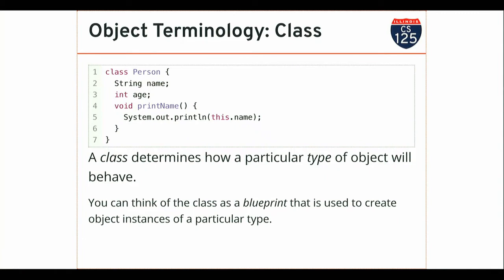To work with people in this particular application I need to know two things: their age, stored as an integer, and their name, stored as a string. Obviously you could store age as a double — people's age is not really an integer, it's a very precise floating point number that's always increasing. But for my program, I've decided those two fields are sufficient. If I needed to add more attributes — like height, weight, eye color, or location — I can do that.